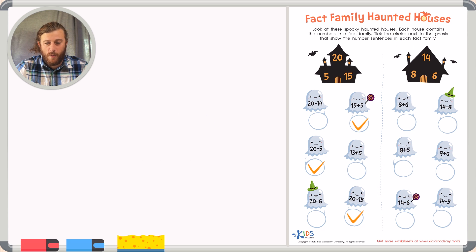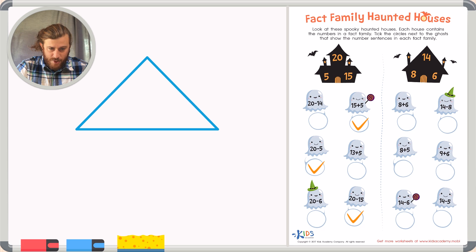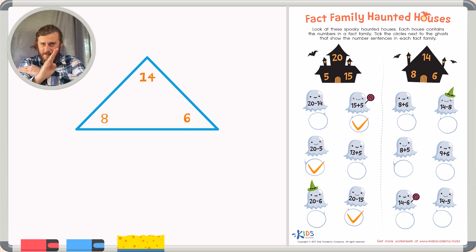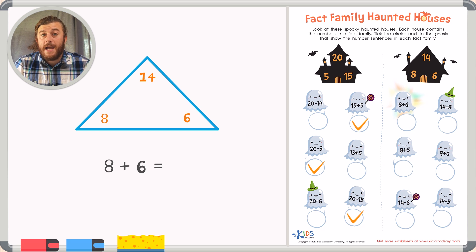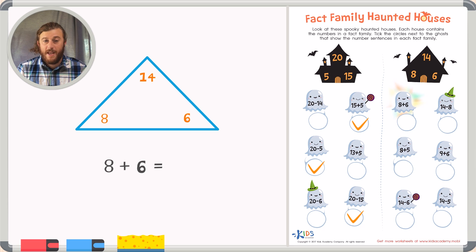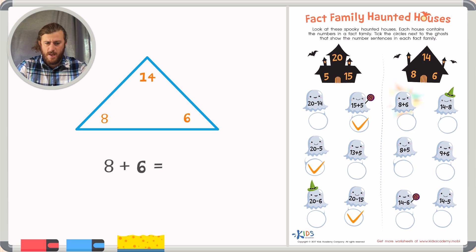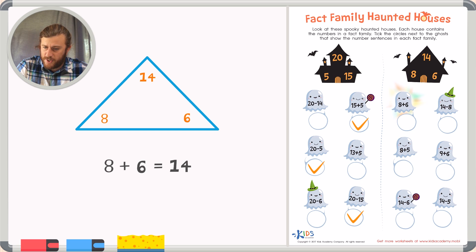Let's take a look at the second fact family on our worksheet. We have another fact family triangle represented by the numbers 14, 8, and 6. Remember, these numbers should add or subtract to equal one another inside the fact family. Let's take a look at the first problem: 8 plus 6. These are two numbers inside the fact family, but let's make sure they add together to equal 14. 8, 9, 10, 11, 12, 13, 14. We have our answer — 8 plus 6 equals 14, and these are the three numbers inside our fact family. So this is correct.